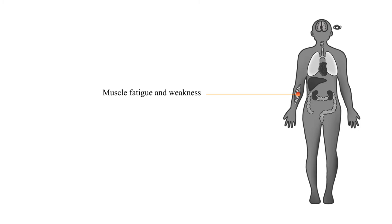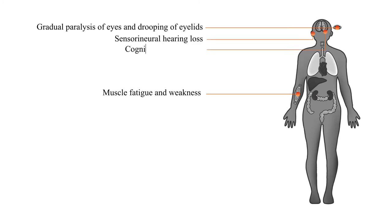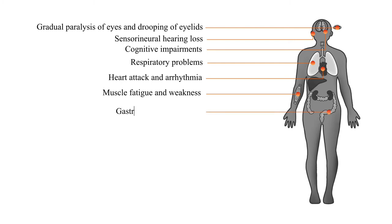Some of the more common symptoms of mitochondrial disease include muscle fatigue and weakness and general exercise intolerance, gradual paralysis of the eyes and drooping of the eyelids, problems with hearing, cognitive impairment such as learning disabilities or delays in development, breathing problems, heart problems, and problems with the digestive system such as unexplained vomiting, cramping, or constipation.